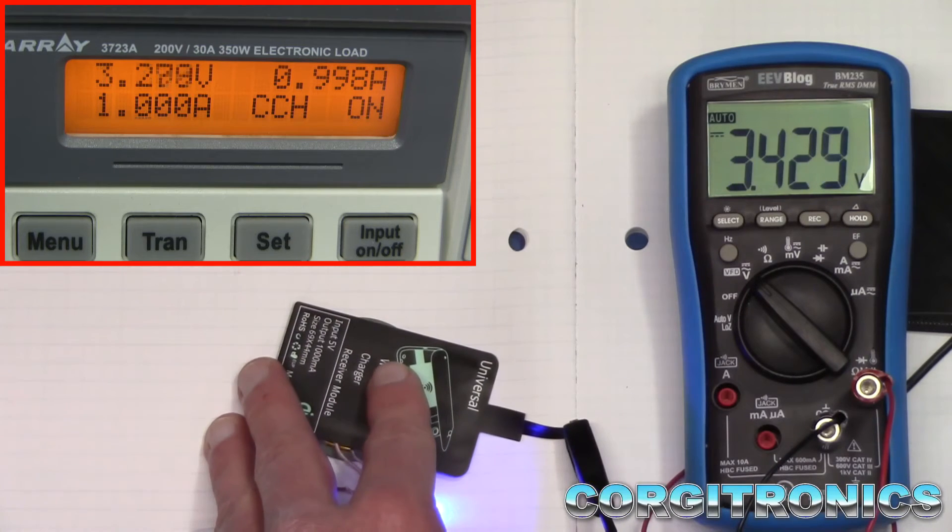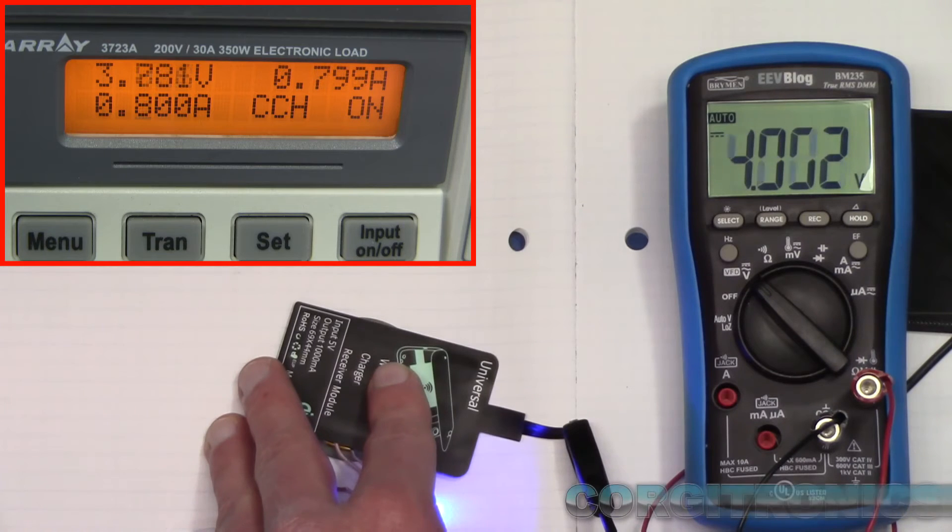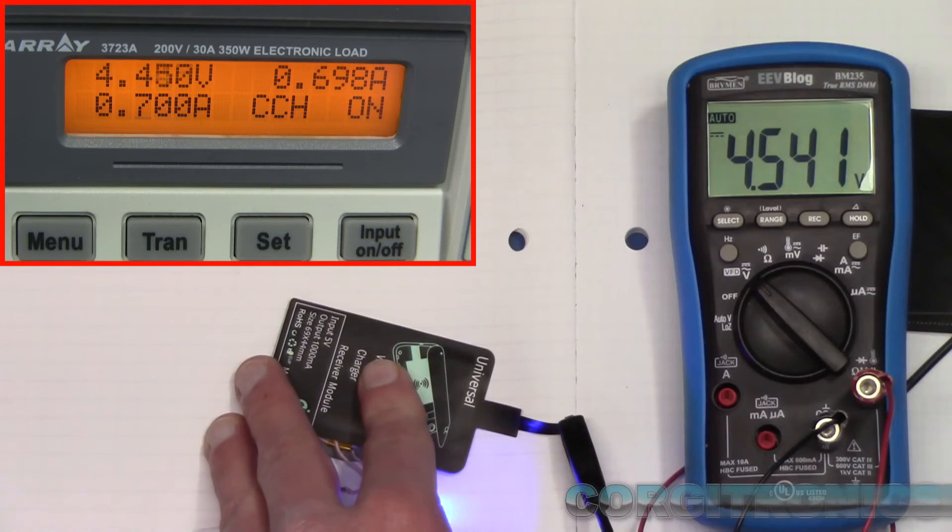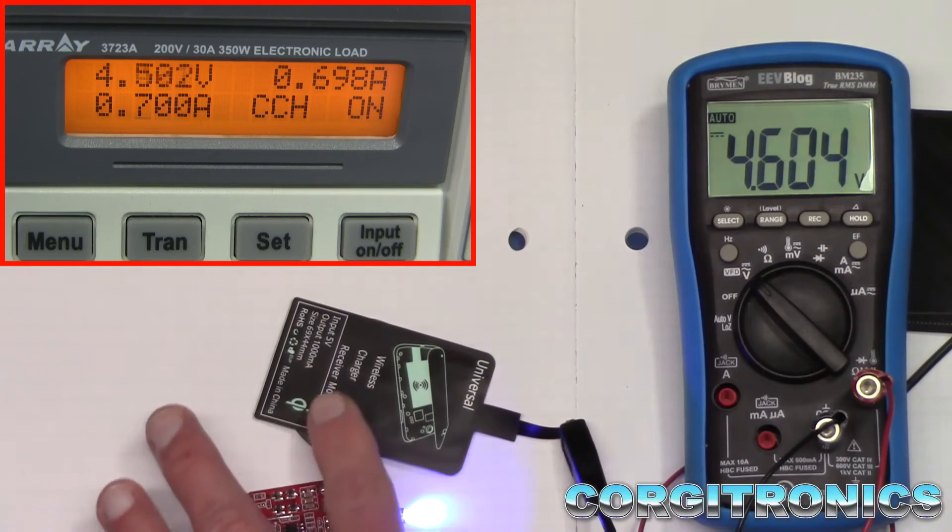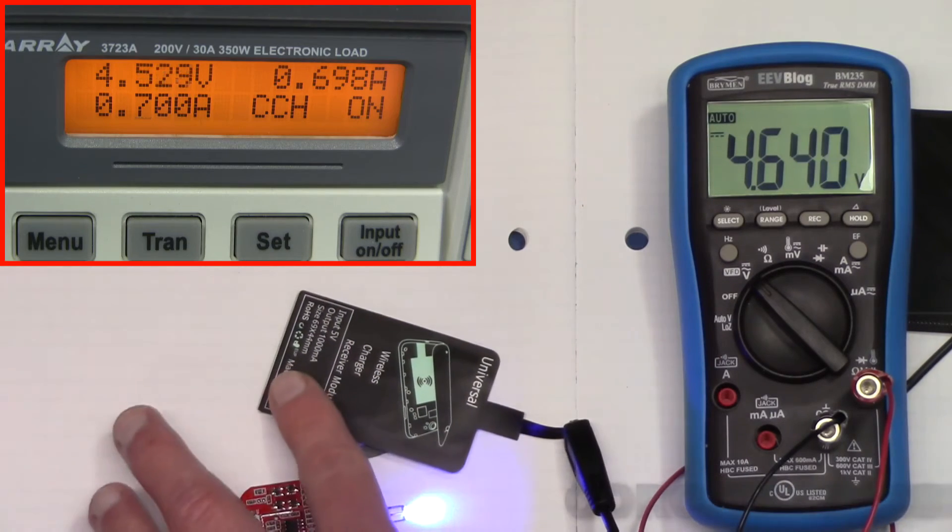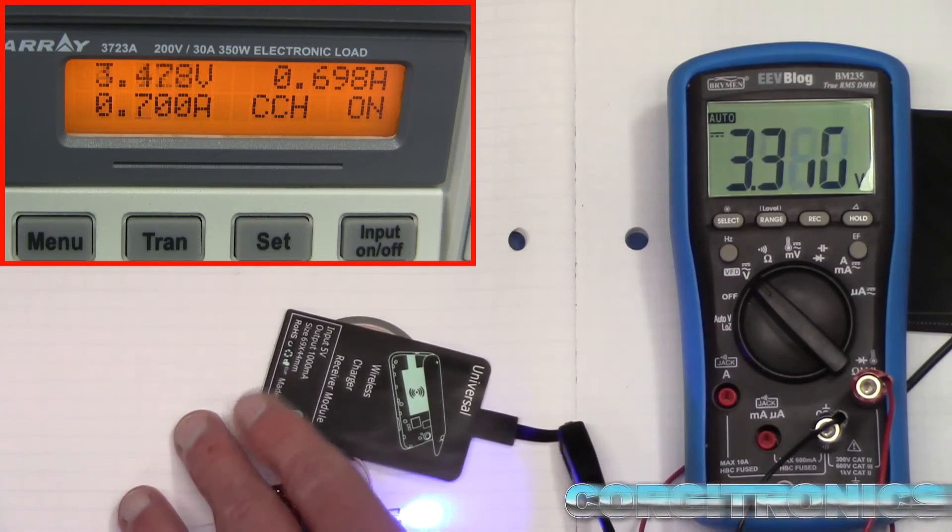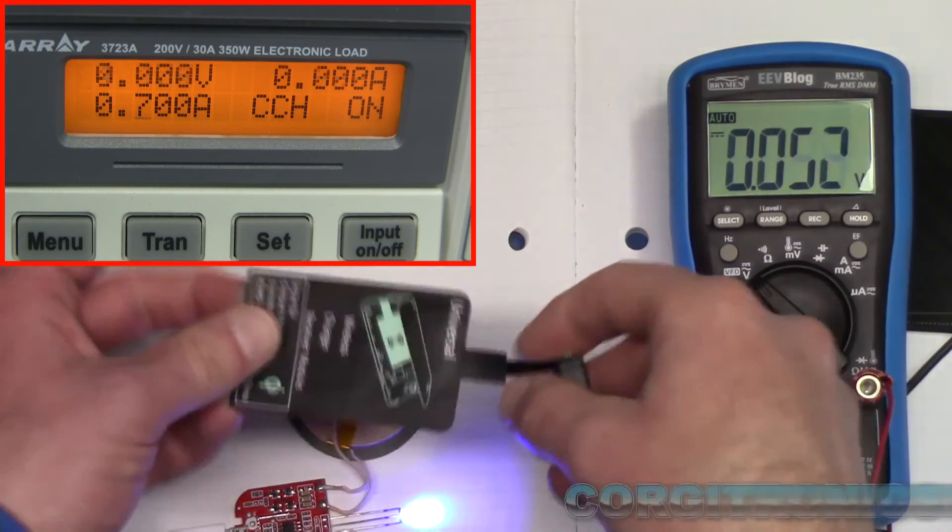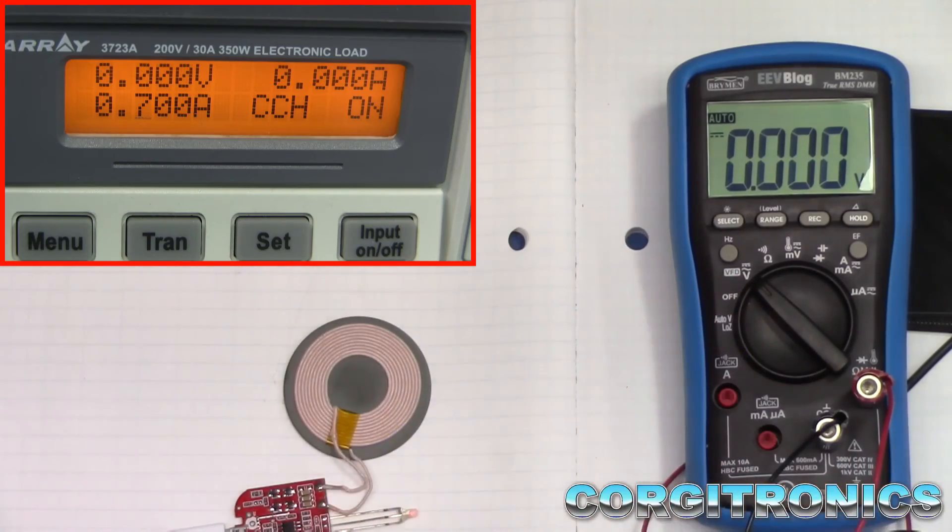Yeah, not really. It'll get you 700 milliamps, probably, with very careful positioning of this coil, the receiver over the transmitting coil, if you manage to get it all in the right place. So, not going to recommend this. Just not too good.